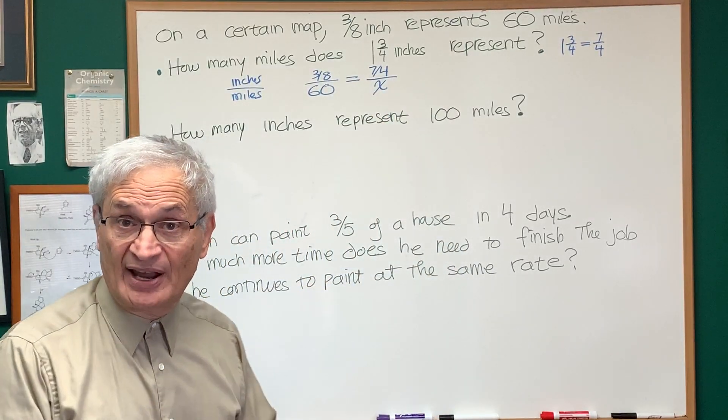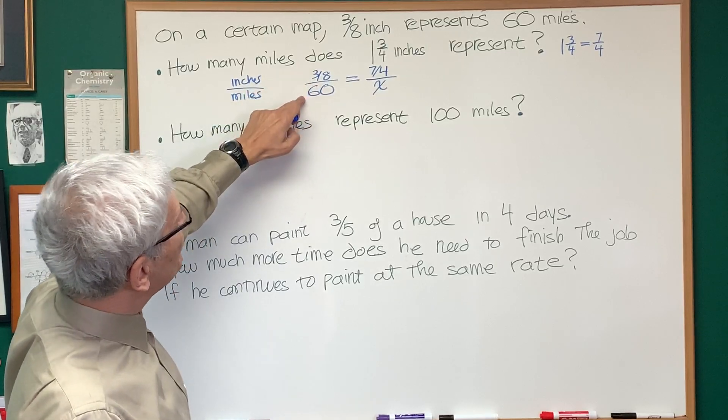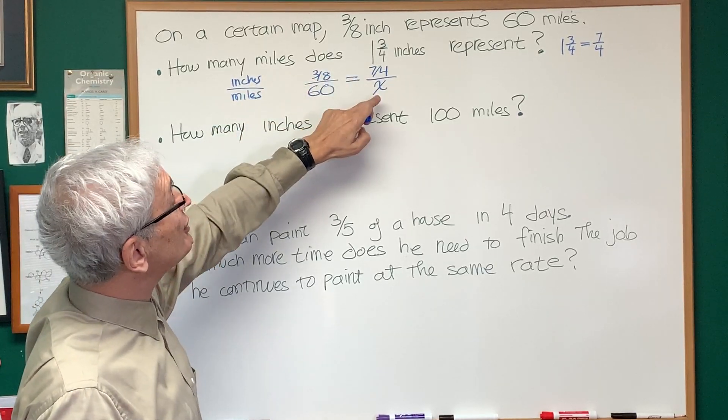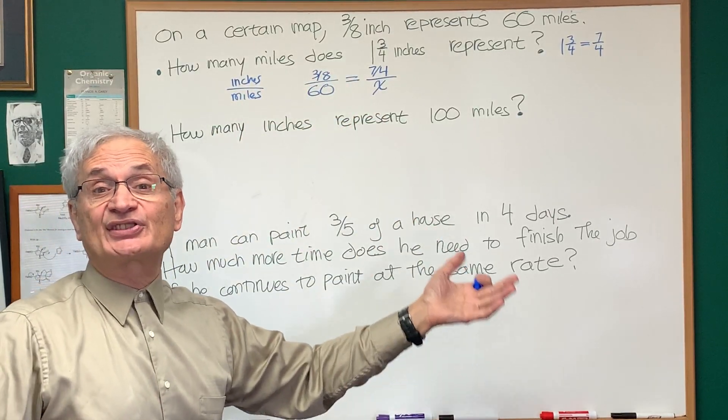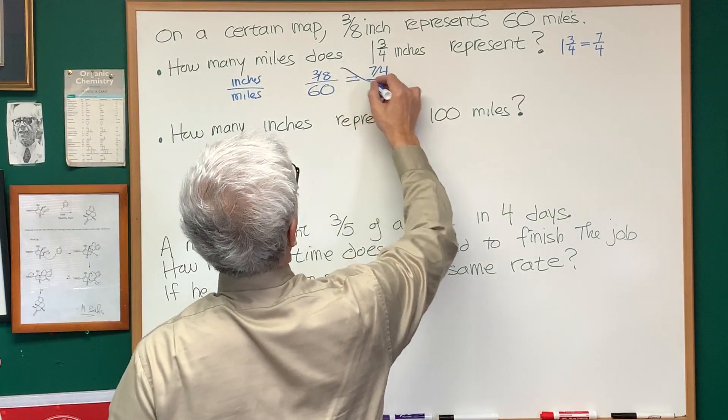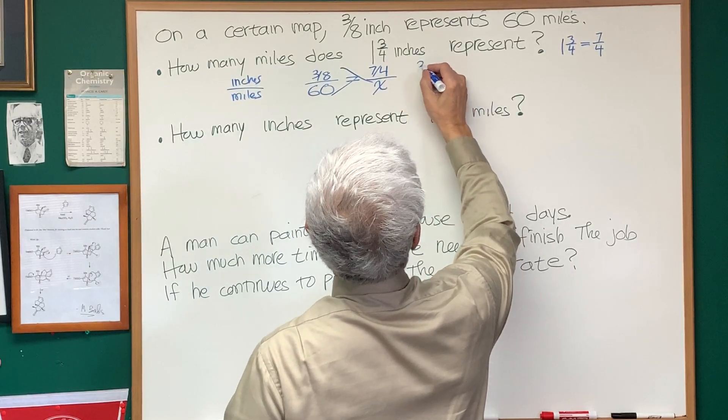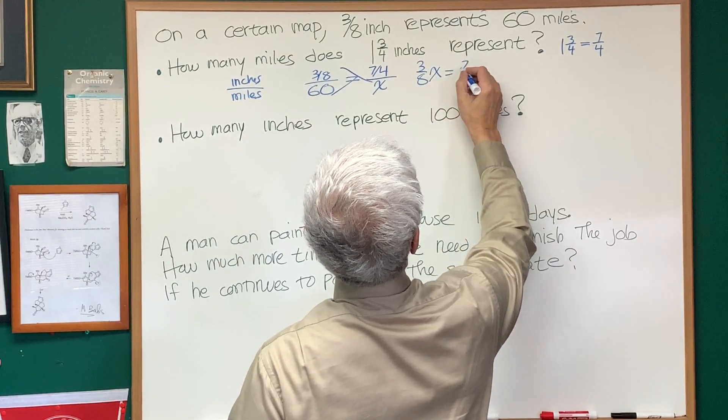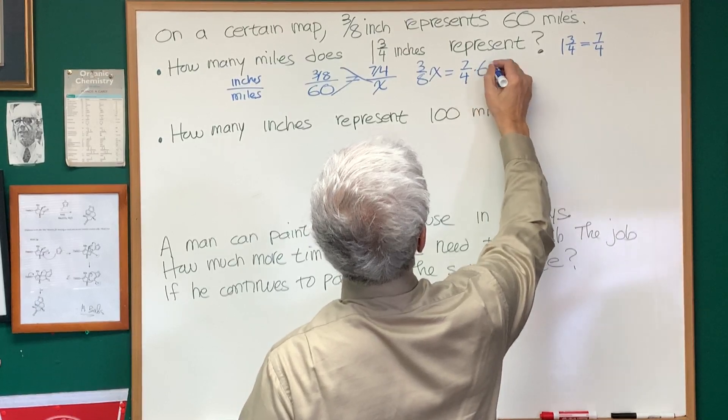So in the denominator, we place x. So three-eighths is to 60 as seven-fourths is to x. How do we solve this? Everybody's favorite mathematical algebraic technique, cross multiplication. So we have three-eighths x equals seven-fourths times 60.